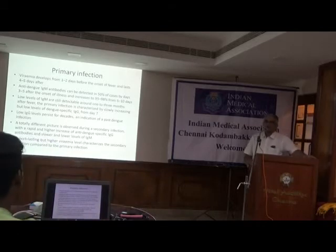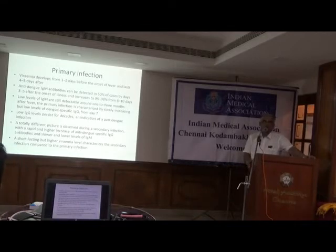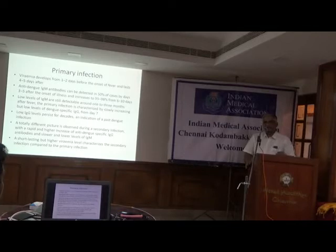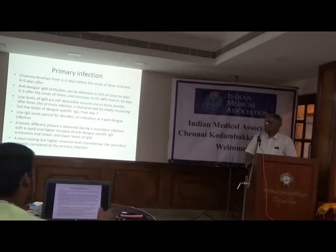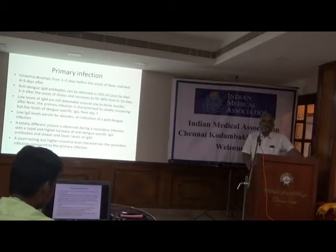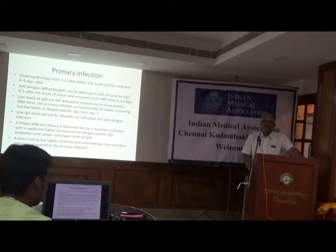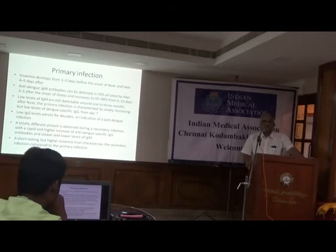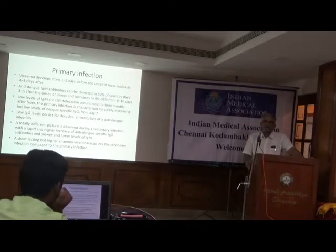In primary infections, viremia is seen in the initial one to two days. During the incubation period the virus multiplies in deep organs and only when it enters the blood — the viremia phase — does the patient develop fever. Anti-dengue IgM antibodies can be detected from the third day onwards in 50% of individuals, but by the fifth day, 90 to 95% will be IgM positive. IgM antibodies persist at low levels up to 30 to 60 days. From the ninth day, dengue-specific IgG antibodies start developing.